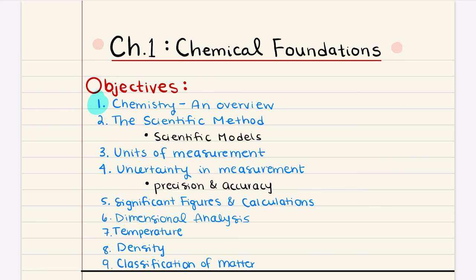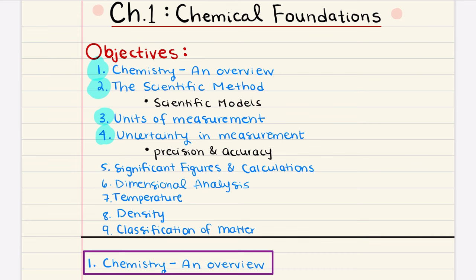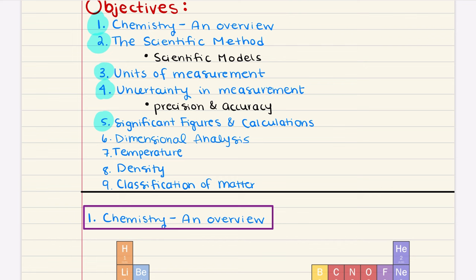In discussing the importance of chemistry, we'll move into objective two: the scientific method. Third, we'll discuss measurement, covering base versus derived units and how units are modified through metric prefixes. We'll also learn that measurements have some degree of uncertainty — that's objective four — and how to distinguish between accuracy and precision. Objective five covers significant figures, including rules for counting them, rules for significant figures in mathematical operations, and rules for rounding.